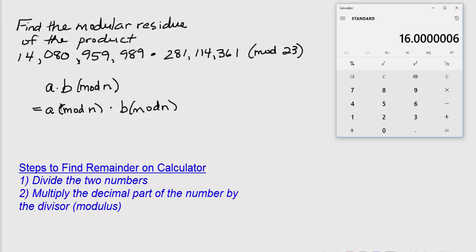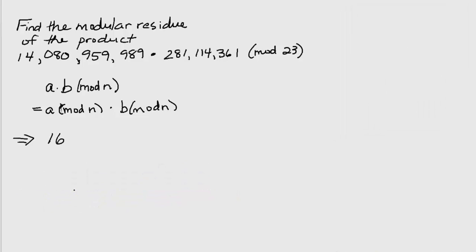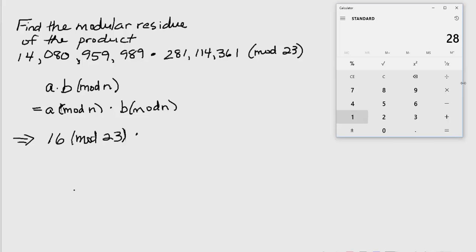So our product has become 16 mod 23 times, and now we're going to work on the other number, 281,114,361 divided by 23. We're going to disregard the 12,222,363 part. We're just going to look at 0.5217 and so on. Let's take it out to 0.52174, and we're going to multiply that times 23.